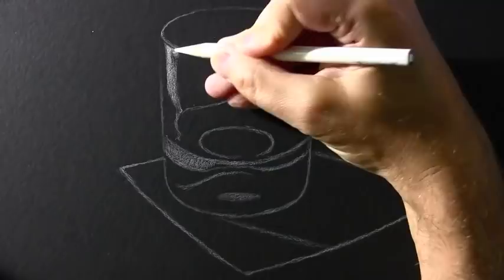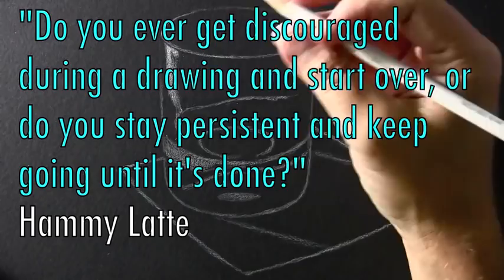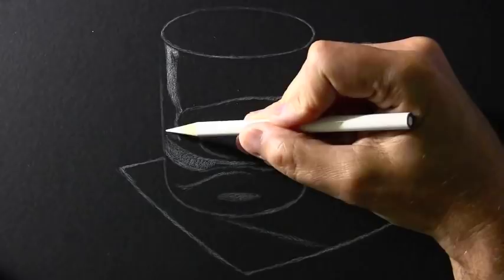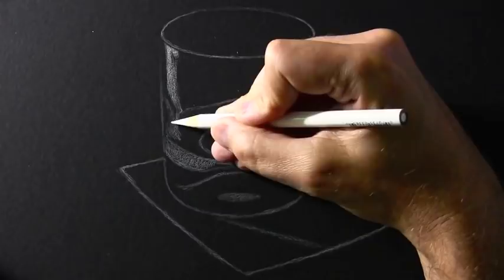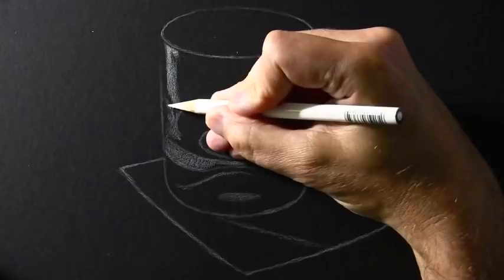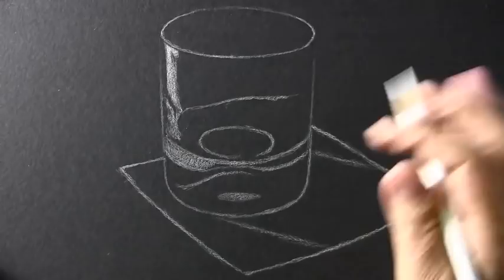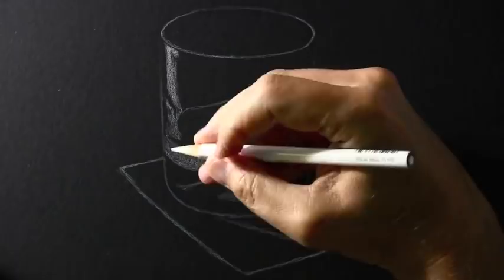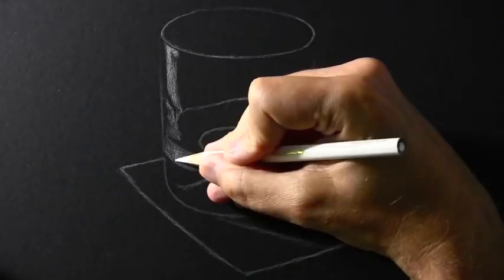Let's get on to question number one from Hammy Latte: Do you ever get discouraged during a drawing and start over, or do you stay persistent and keep going until it's done? That question makes me think of the times where I have had to give up on certain illustrations because they just weren't working out. But as I thought about it, it seems to me that you have to give every drawing that you're working on a chance. I work on it for quite a while. I'd say I get at least halfway through before deciding whether it's working or not.